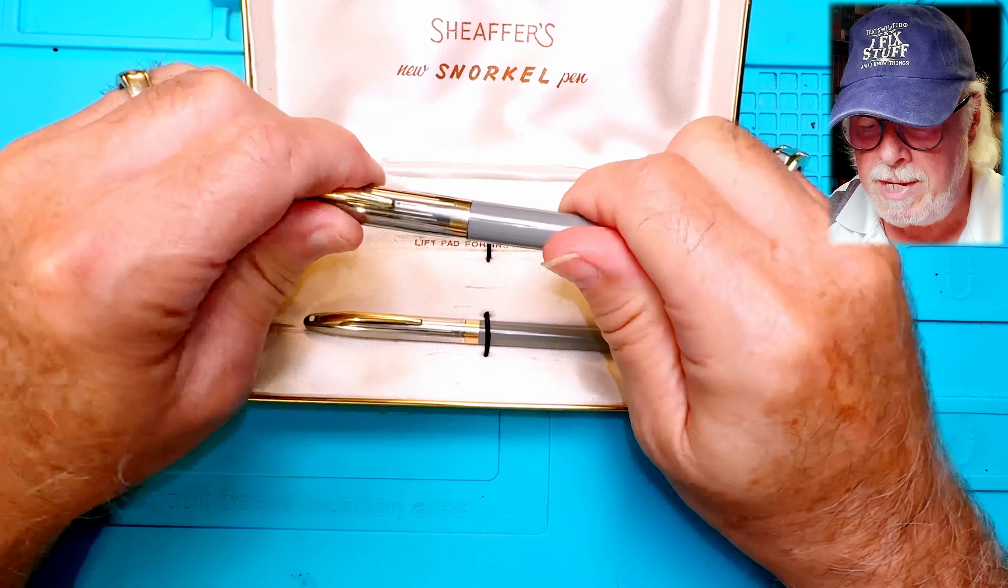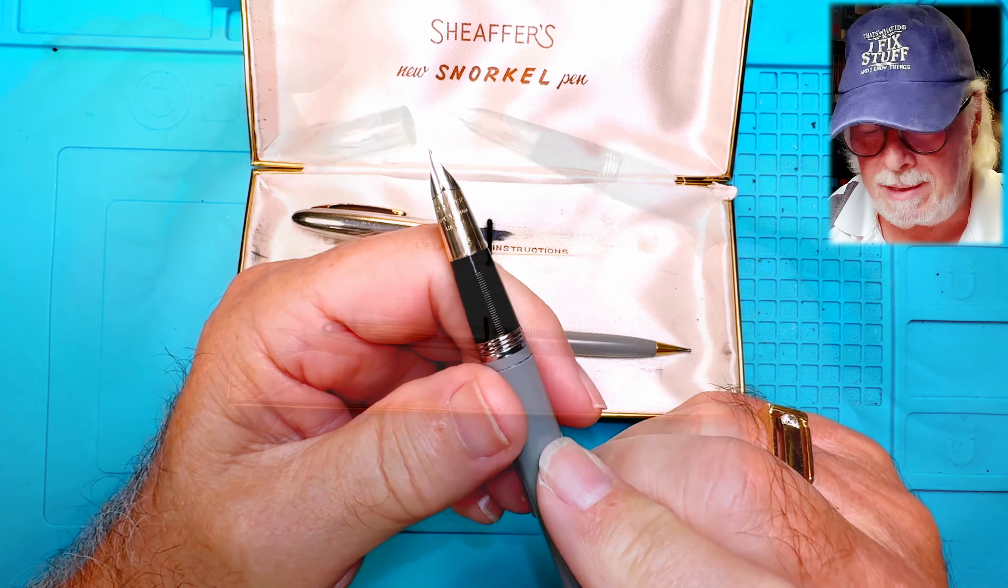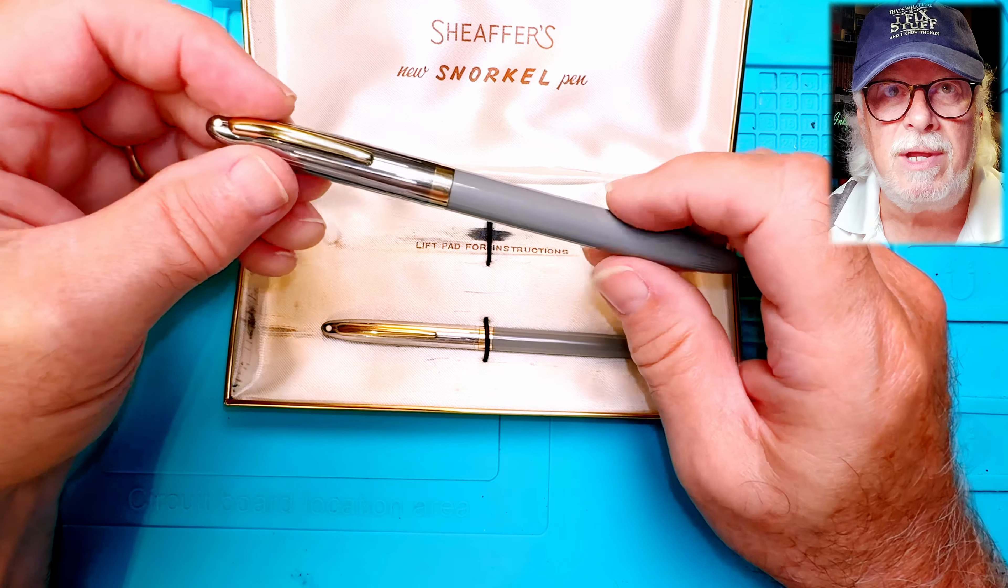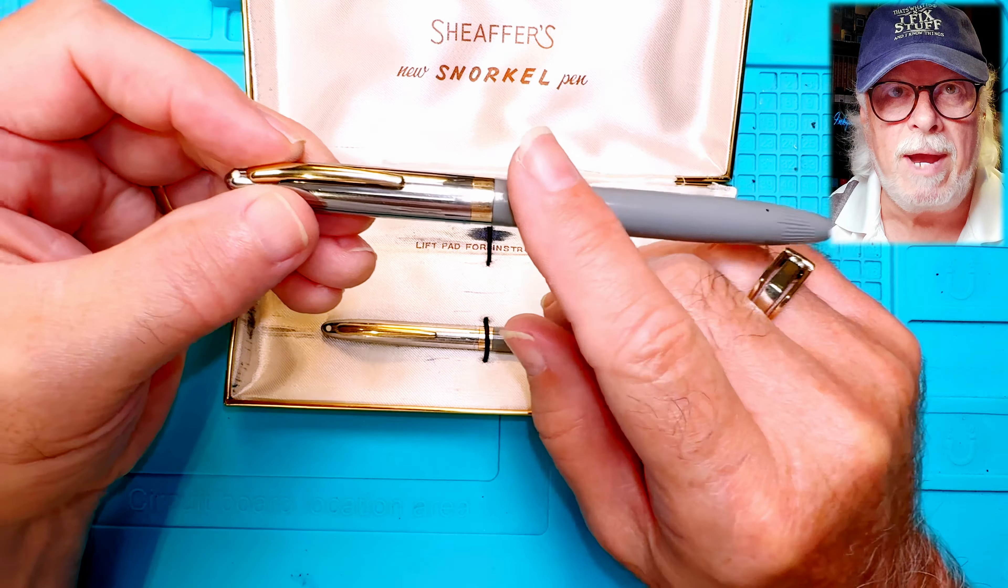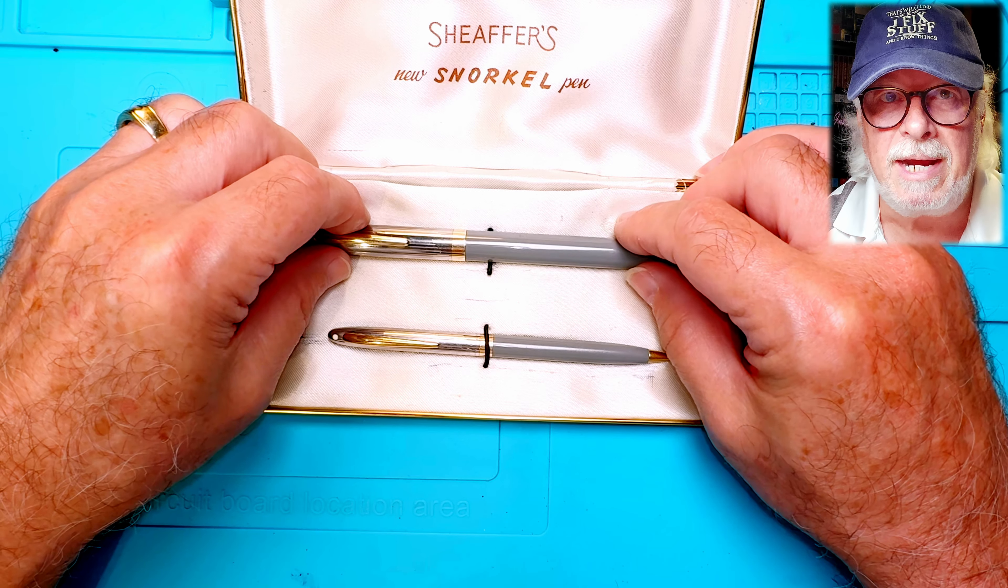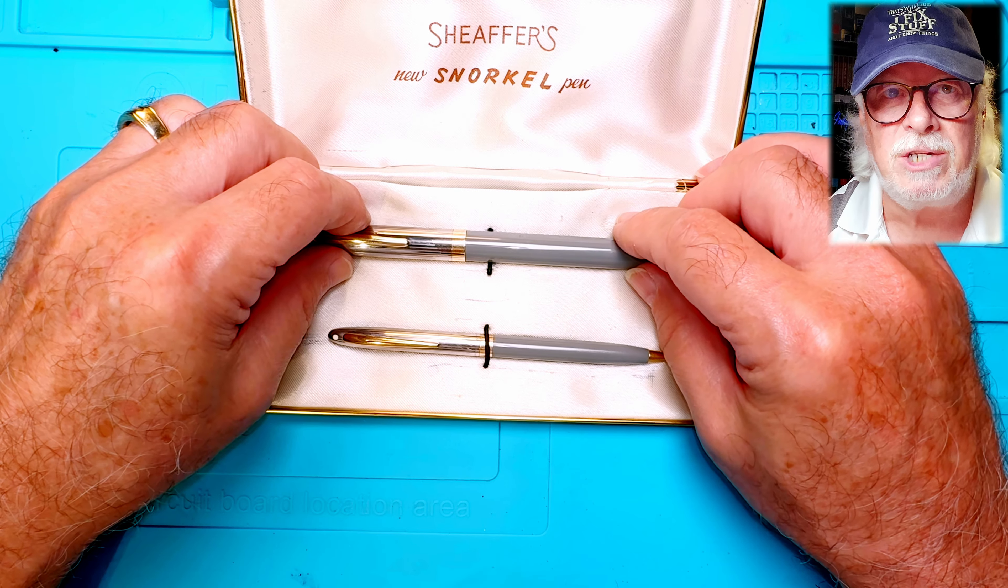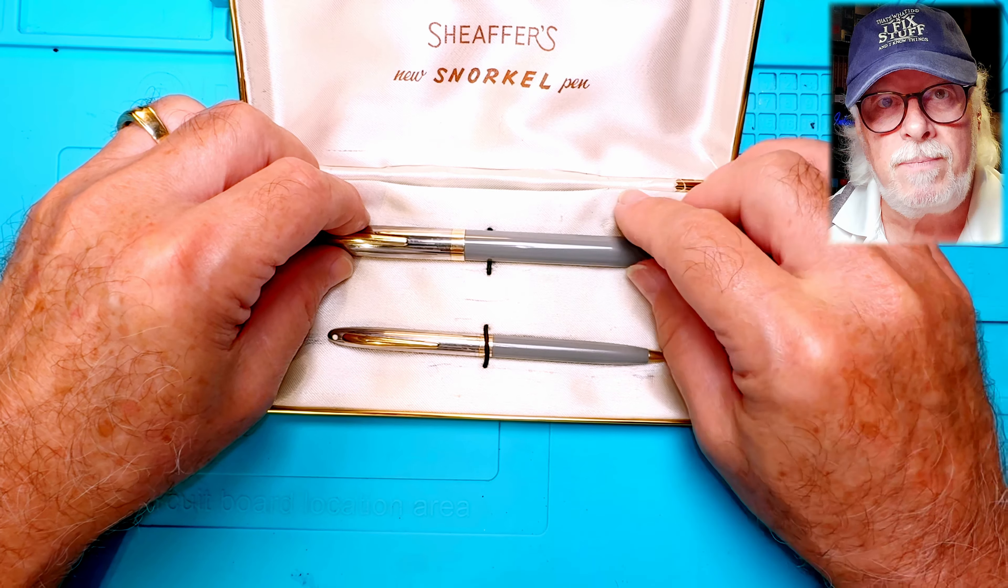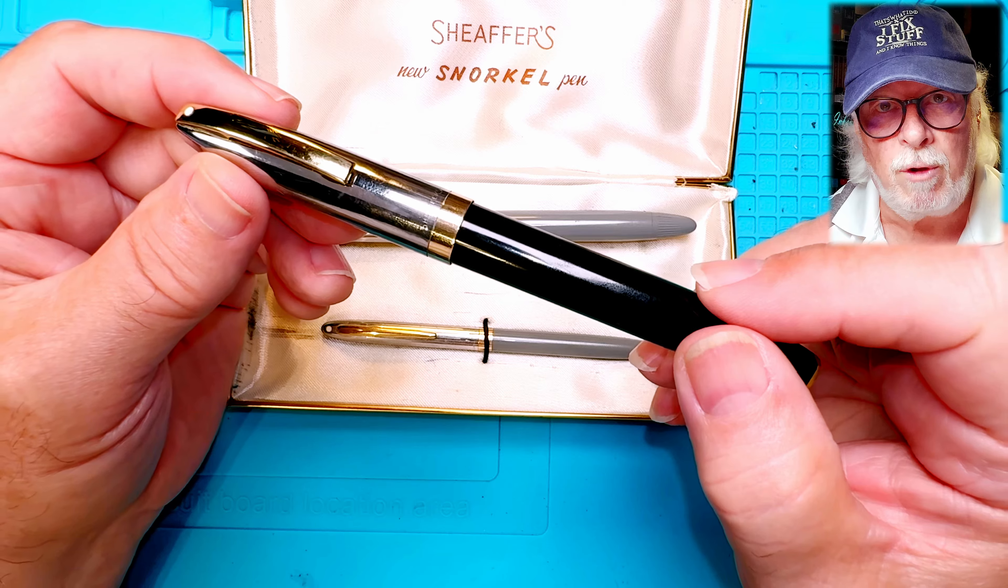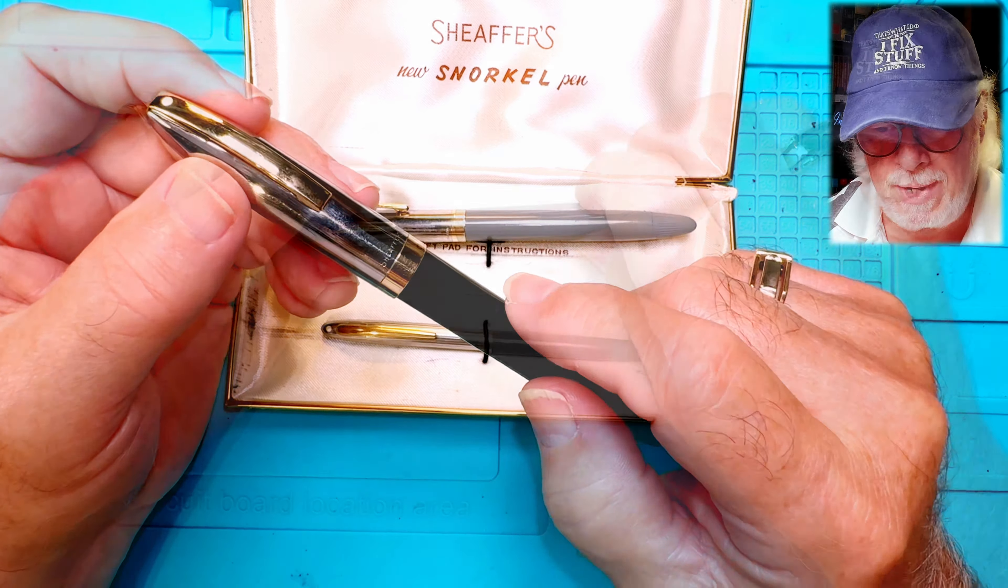It has a beautiful Triumph style tubular 14 karat gold nib and a lovely gold and chrome cap, not to mention the very nice dove gray barrel. I've done two other Schaefer Snorkel restorations, a 1952 Schaefer Valiant and this 1960 Schaefer PFM, which you can see by clicking up there.